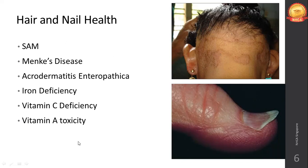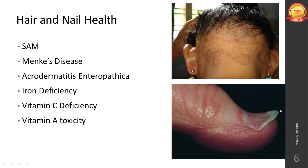Iron deficiency could lead to koilonychia — spoon-shaped fingernails — and could also lead to hair loss. Hair loss is not always related to biotin. Don't go by the marketing of biotin gummies — having biotin gummies does not solve hair loss for everyone. You have to find the root cause: it could be hormonal, other major deficiencies, disease conditions, products used, allergic reactions, or autoimmune disorders that attack hair follicles.